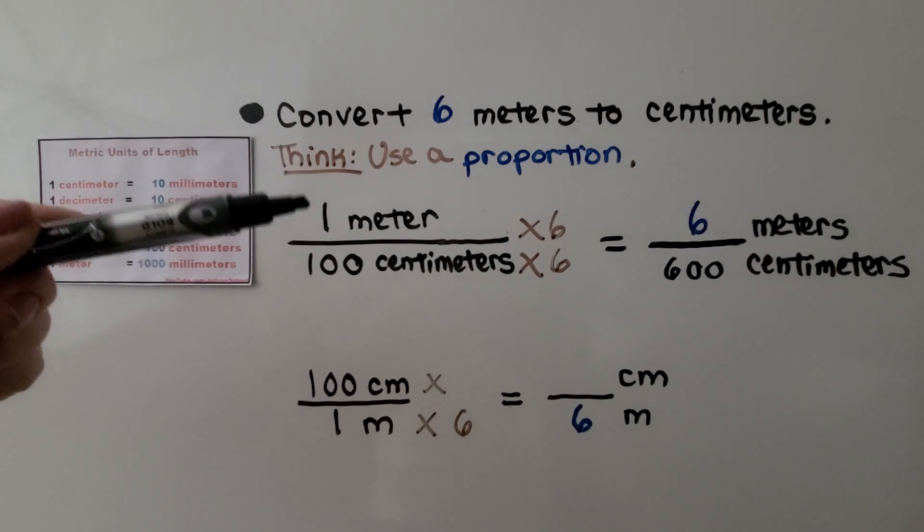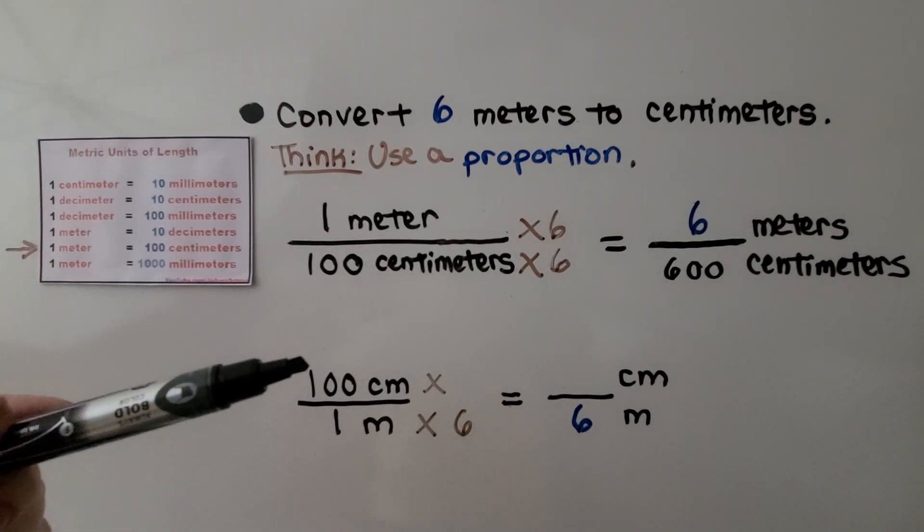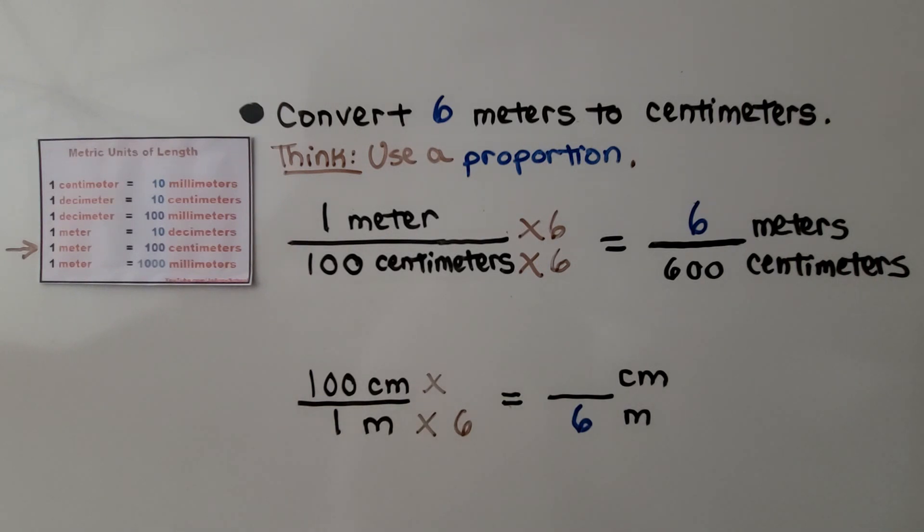Now do you notice I've got the meter on top and the centimeters on the bottom? Could we solve it with the centimeters on top and the meter on the bottom? We know one meter is going to be in the denominator. We need to multiply it by six to get six meters. That means we need to multiply the centimeters times six, which means it's 600.